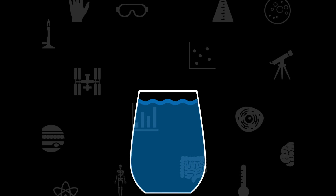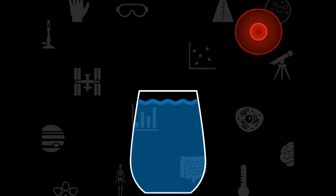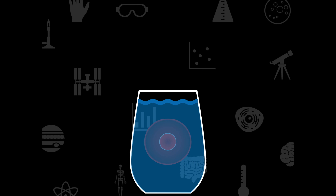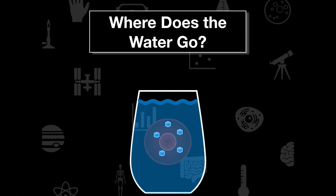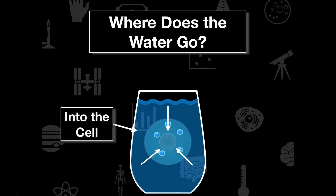We can look at how cells interact with their environment and what happens to water in cells. This is what we call osmosis. Say I have a cell and I drop it in a glass of water. We assume the cell has salt particles in it — all cells have salt — and the water is completely fresh. Where does the water go? The water goes inside the cell, because we want to equalize the ratio of water to salt. Water always moves to where there are more salt particles.